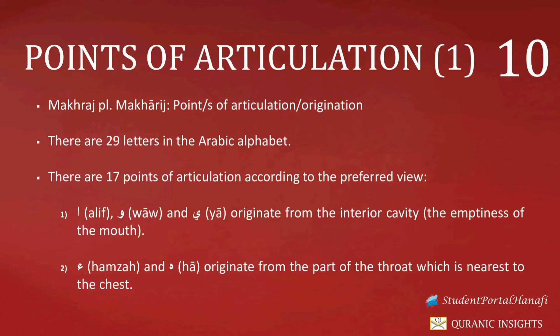The second letter is Wao Madda and the third is Ya Madda. Wao Madda refers to the instance in which we have a Wao sakinah with a dhamma — a pesh — before it. For example, in the glorious Qur'an we have the word Ju'un. Within this word, the second letter is a Wao sakinah, and prior to it we have a dhamma upon the letter Jim. Due to finding a Wao sakinah with a dhamma before it, we refer to this Wao as Wao Madda.